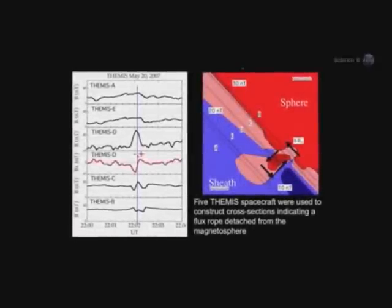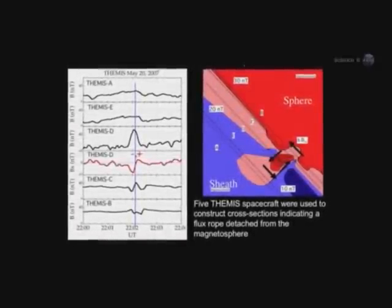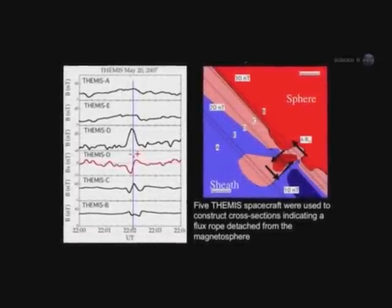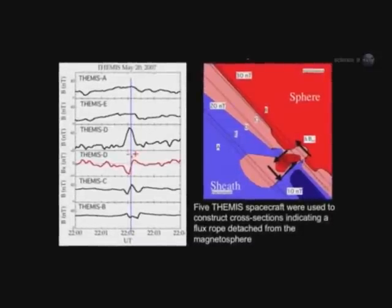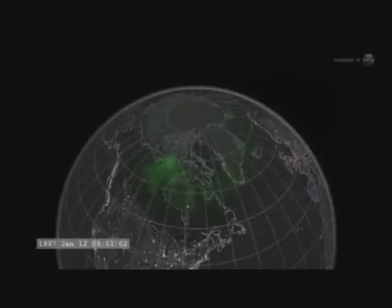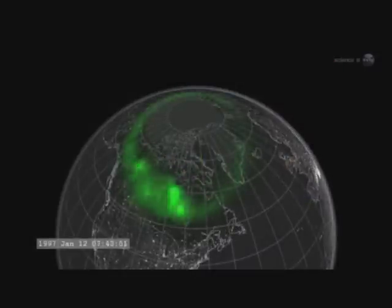Most portals are small and short-lived. Others are yawning, vast, and sustained. Energetic particles can flow through the openings, heating Earth's upper atmosphere, sparking geomagnetic storms, and igniting bright polar auroras.